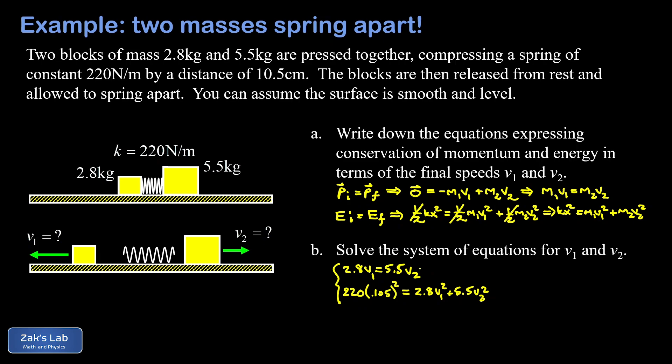The whole approach to the solution is to use substitution. I can solve for one of these v's in terms of the other. I'm going to solve for v1 in terms of v2, so I divide both sides by 2.8, which gives me v1 is about 1.964·v2. Then we substitute that into the second equation, giving us an equation where the only unknown is v2. The 220 times 0.105² gives me about 2.4255, and on the right side I have 2.8 times v1² but v1 is 1.964·v2, plus 5.5·v2².